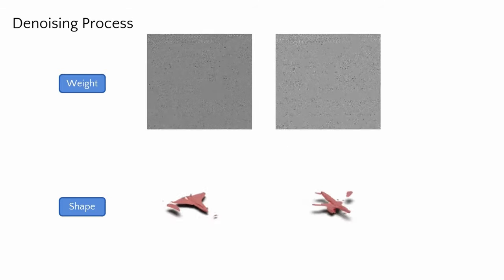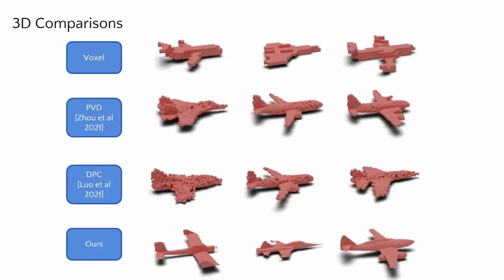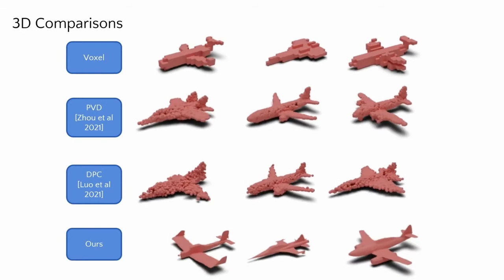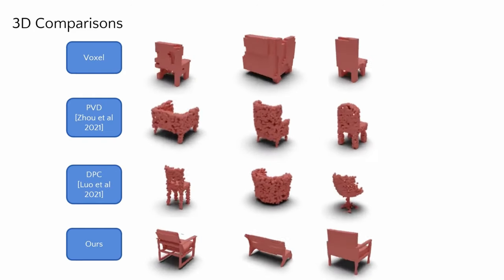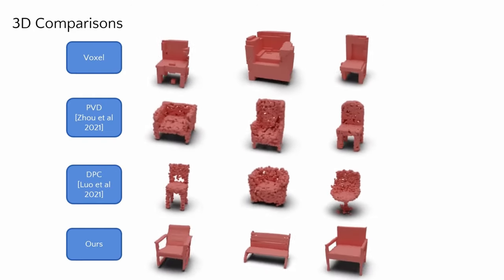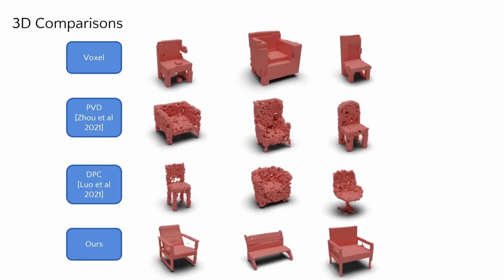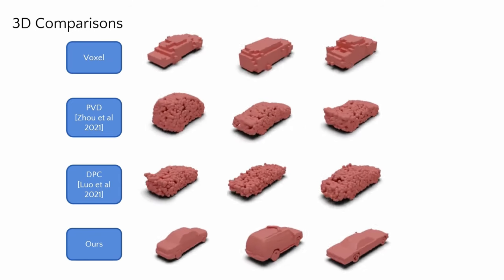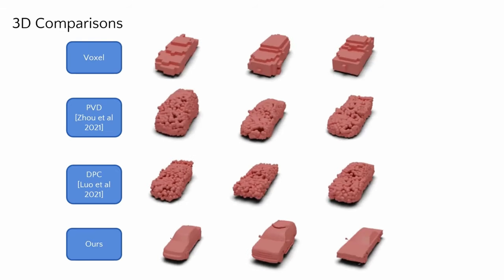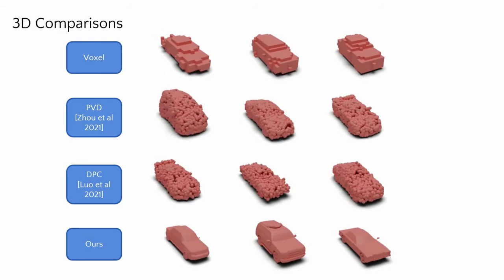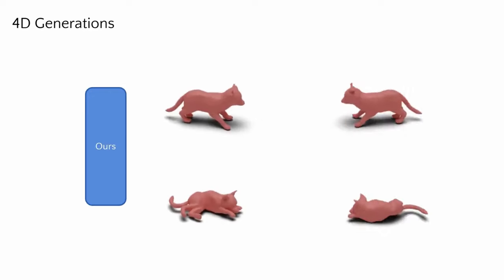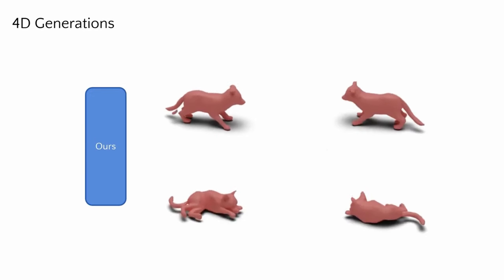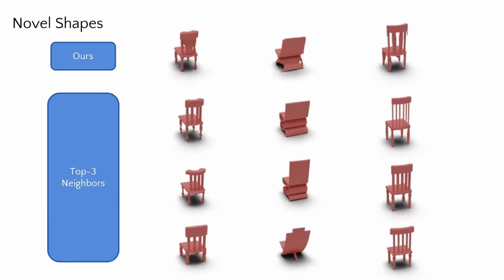Our approach is agnostic to the dimension of the raw encoded data, enabling generation of both 3D and 4D shapes through the same process. The denoising progression from a set of random MLP parameters results in an MLP representing a meaningful shape. Our approach achieves state-of-the-art unconditional 3D shape generation, as well as 4D generation of deforming shapes. Our method can generate new neural fields representing novel shapes, as shown by the nearest neighbors from the training set.